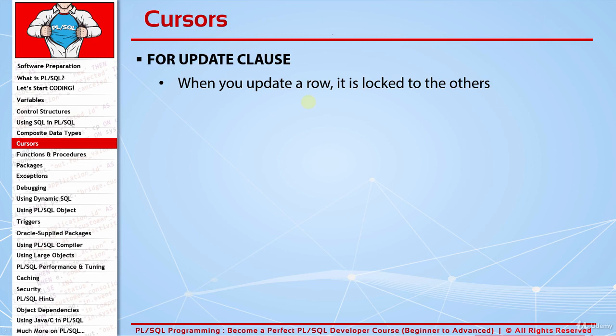Sometimes we may need to lock a group of rows for some time and prevent any changes until we finish our job. For example, when calculating employee salaries based on workdays, we don't want day-off records or commission percentages changed by someone else. Normally we'd update all rows with the same values to lock them, but this is inefficient — it produces thousands of unnecessary updates, inserts into log files, and wastes database resources.